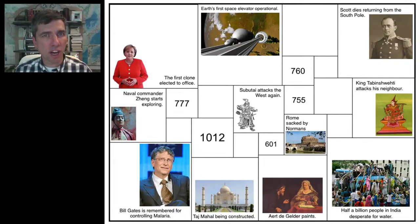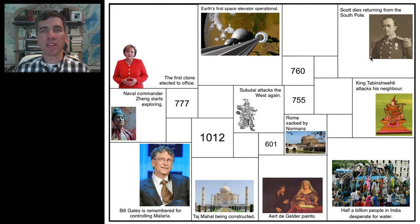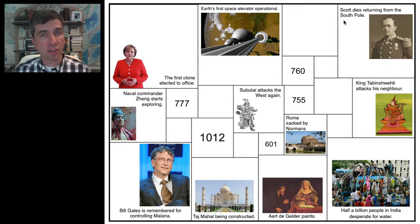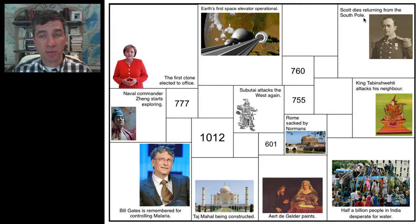One variation on the Algebra on Rectangles puzzle is to allow the squares to be dates. For example, up in the right corner, we have a hint that the students can create for themselves — they're creating their own puzzles here. This is the hint that this student has given: Scott dies returning from the South Pole. In this case, there is only one answer, and that is 1912.